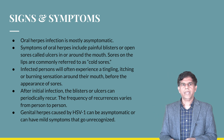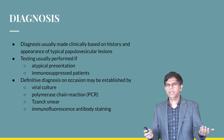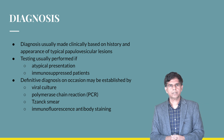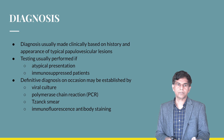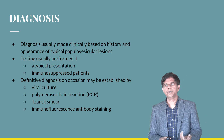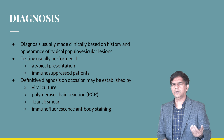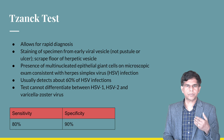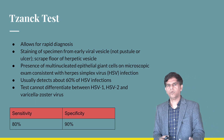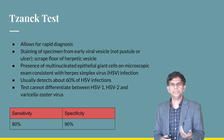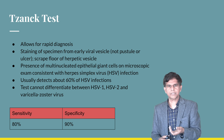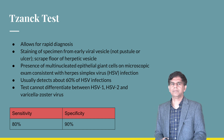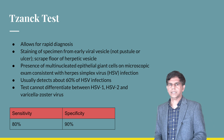Diagnosis is based mainly on history and physical examination; expensive tests are not always necessary. However, definitive diagnosis can be made using viral culture, polymerase chain reaction, Tzanck smear, immunofluorescence, and antibody staining. The Tzanck test provides rapid diagnosis by staining specimens from early viral vesicles; it shows multinucleated epithelial giant cells. It has a sensitivity of 80 percent and specificity of 90 percent.